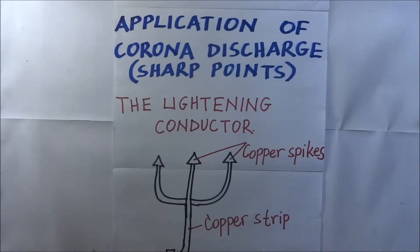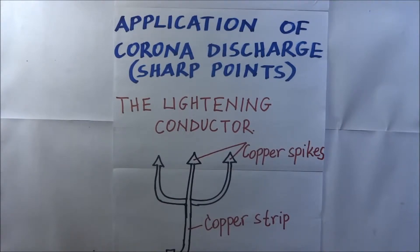This device was invented by an early scientist called Benjamin Franklin, which is why it is sometimes referred to as the Franklin rod. In this tutorial, we shall discuss how this lightning conductor, or lightning rod, works.